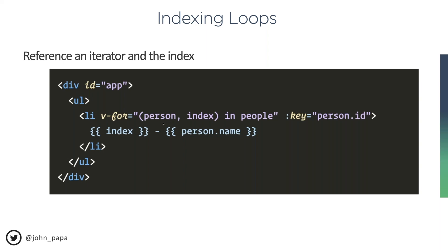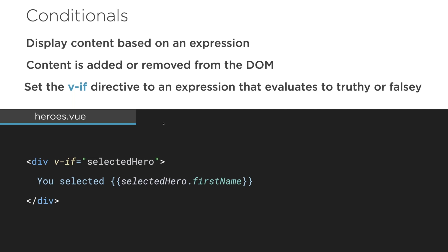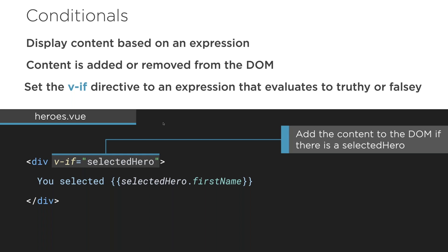Along with v-for, we have v-if for conditionally rendering content. 'v-if="selectedHero"' means: if that object exists (e.g., it's set to Madeline), render the div and evaluate the expression — like showing selectedHero.firstName. If selectedHero is null, undefined, or any falsy value, the div won't render at all, so the expression never gets evaluated. This is great for master-detail layouts where you show details only when something is selected.